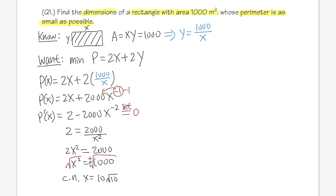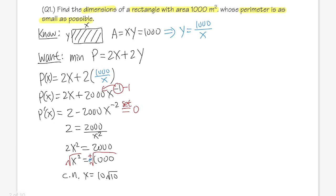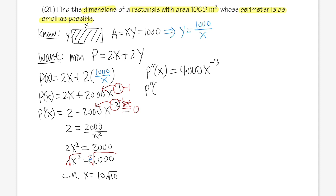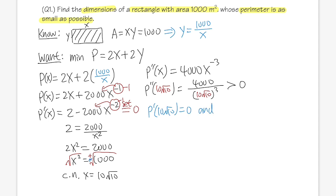Taking the second derivative: P''(x) = 4000x to the negative three. Plugging in x = 10√10, we get 4000 over x³, which is clearly greater than zero. So: P'(10√10) = 0 and P''(10√10) > 0. When the first derivative is zero the tangent line is flat, and when the second derivative is positive the function is concave up, meaning we have a minimum.